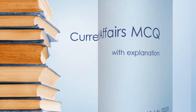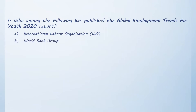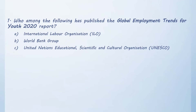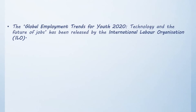Starting with the first question: who among the following has published the Global Employment Trends for Youth 2020 report? Option A: International Labour Organization. Option B: World Bank Group. Option C: UNESCO. Option D: World Economic Forum. The correct answer is Option A, International Labour Organization.